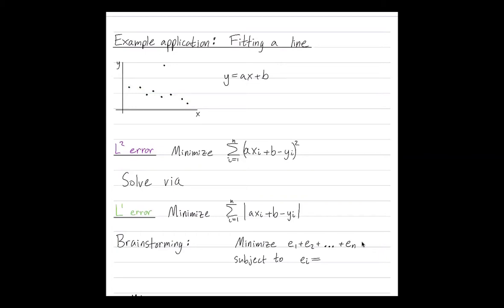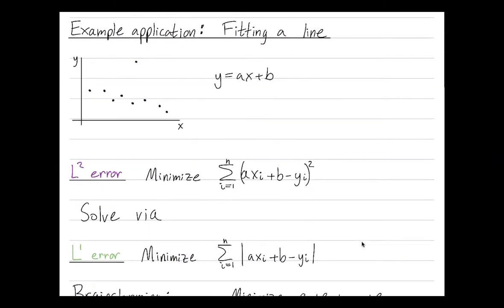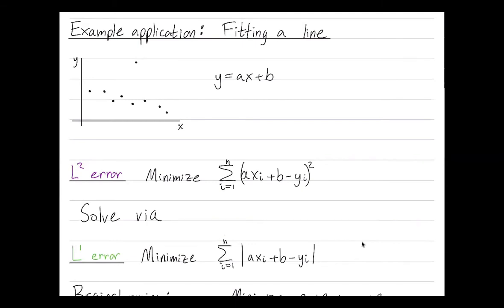So I want to first just talk about two different notions of error: L2 error versus L1 error. Let's say I have some line. I have no claim that this is a good fit. How do I talk about the error of this fit? We'll do error going straight up vertically. Another form of error would be perpendicular error.